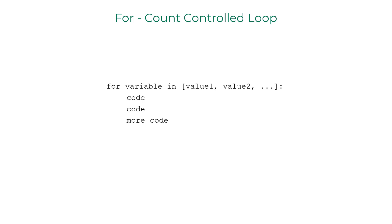For loop is a count control loop. A count control loop executes the code within its scope repeatedly a specific number of times.